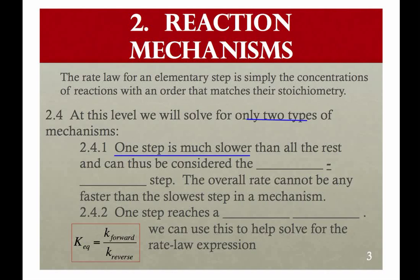One has a slow step, and the slow step is going to dictate the rate of the reaction. Just like in one lane, the slowest car is going to dictate how fast it can go. So the slow step is called the rate determining step. And then the overall rate cannot be any faster than the slowest step.